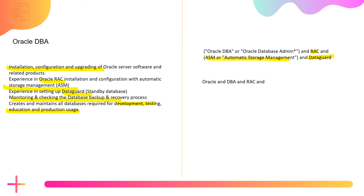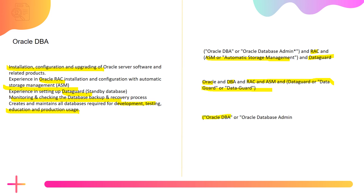I can write Oracle DBA in a different format — writing 'Oracle' separately and 'DBA' separately — trying to bring more keyword relevancy to my search using this second string. The third search string I'm using defines Oracle DBA or Oracle Database Admin and install, configure, ASM, RAC, and Data Guard. This is my third search string.